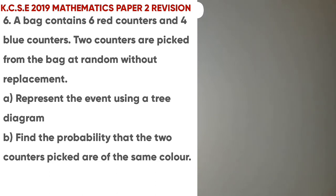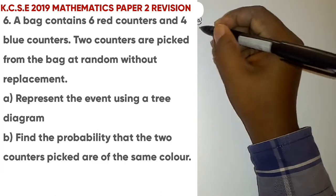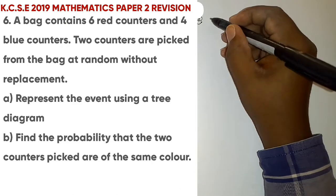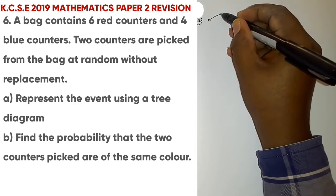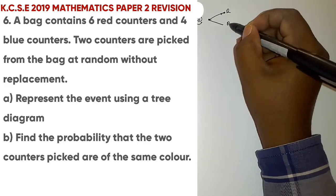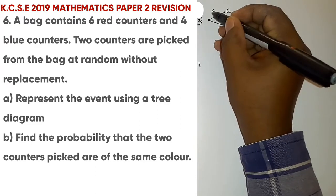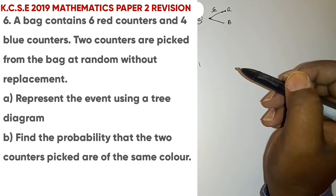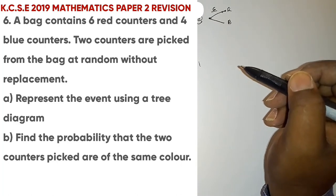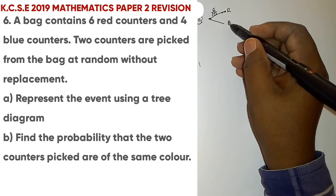The first part of question 6 asks us to represent the event using a tree diagram. In the first pick, you can either pick a red ball or a blue ball. The probability of picking a red ball is 6 out of 10, since there are six red and four blue balls giving a total of ten. The probability of picking a blue counter is 4 out of 10.